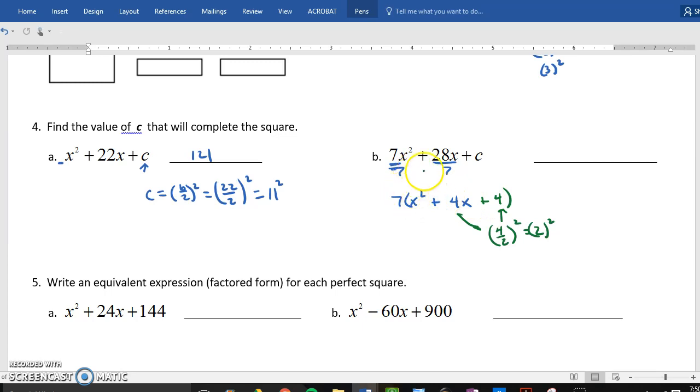So, what you have to understand is, what is this number going to be? Well, if I distribute this seven back out, seven times four is 28.